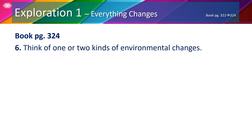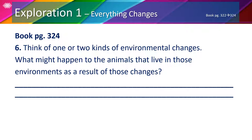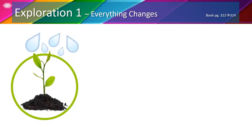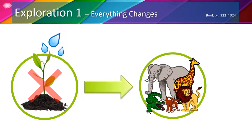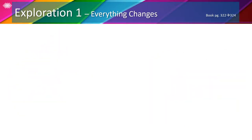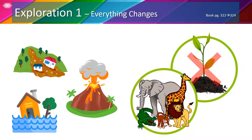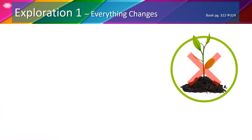On the same page, number 6, think of one or two kinds of environmental changes — what might happen to the animals that live in those environments as a result? When flood waters go down, animals move back. When volcanoes erupt, animals flee and may not return. We know that plants need water to survive, but when a plant does not get enough water it will die. Animals eat plants, so when there aren't enough plants to eat, animals will either move to a new place or die. When a fast change happens — such as a mudslide, a volcanic eruption, or a flood — all the plants might be killed, but not all the animals, because plants cannot move to avoid an environmental change but some animals can flee the area and find a safer place to live.